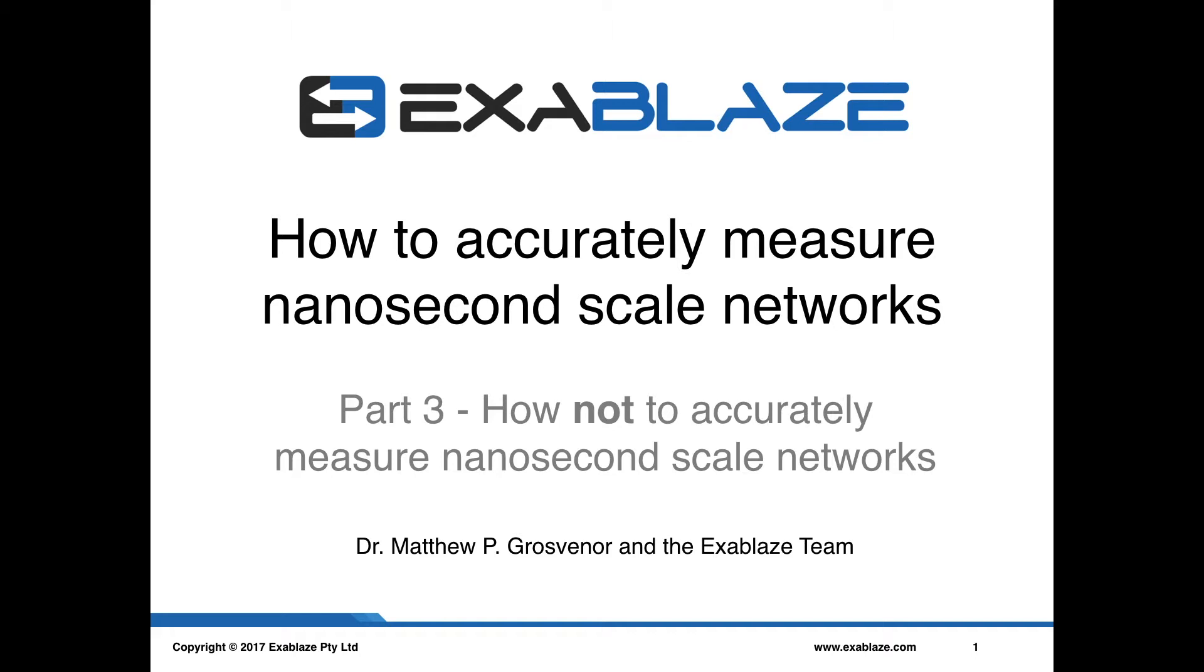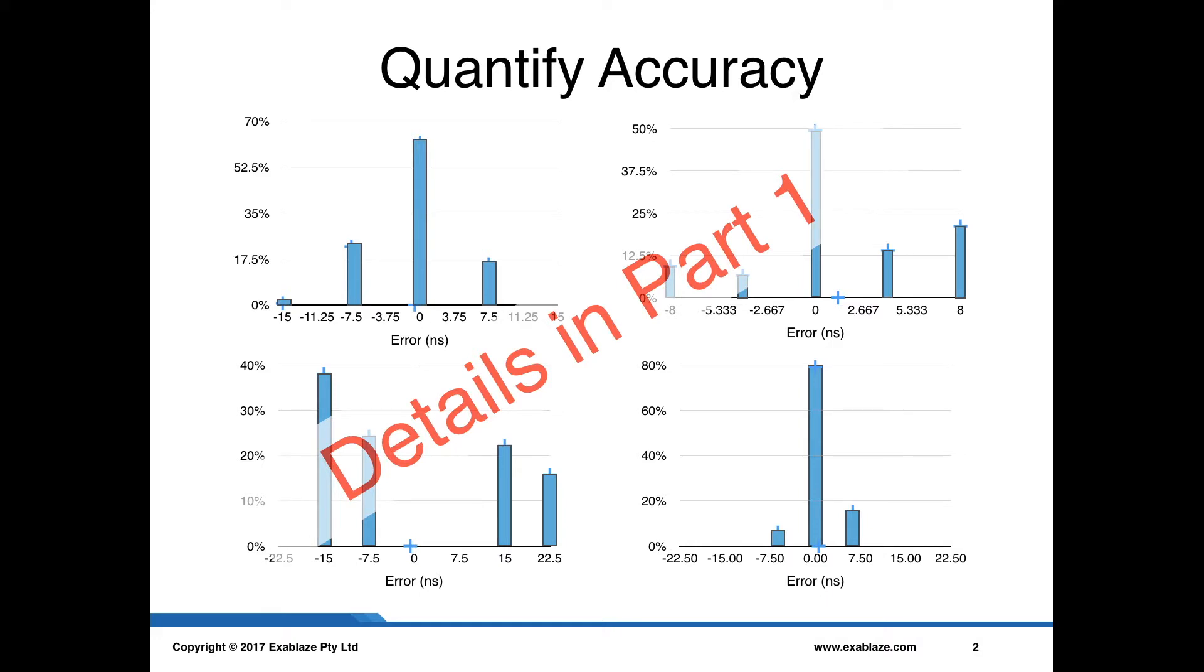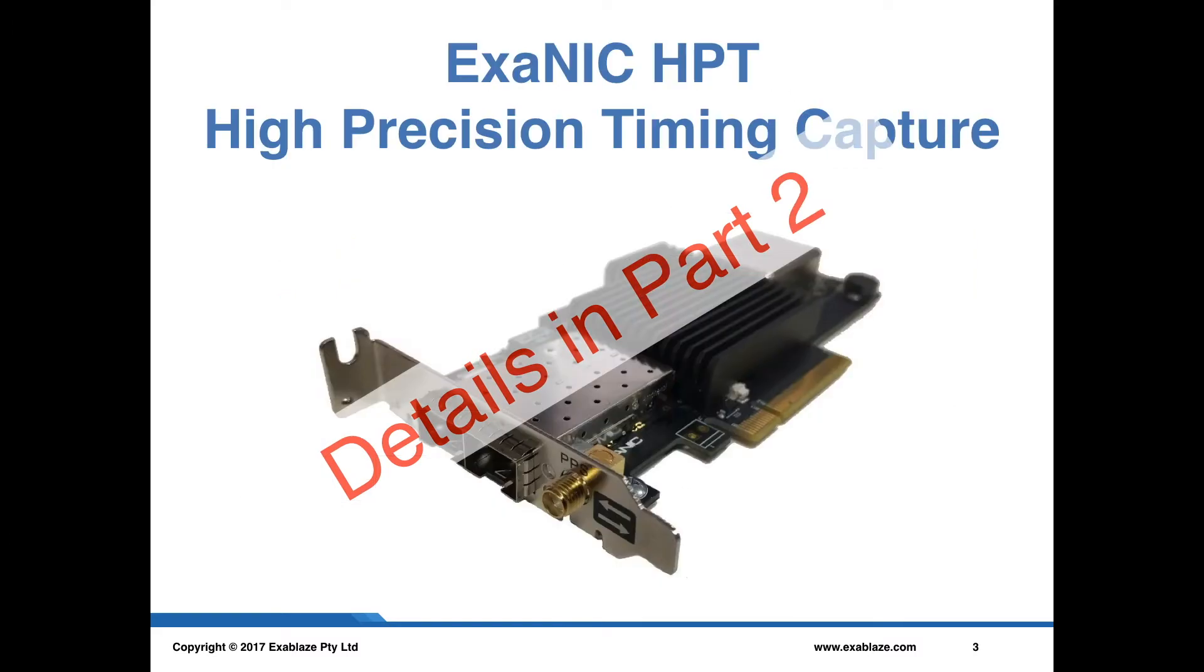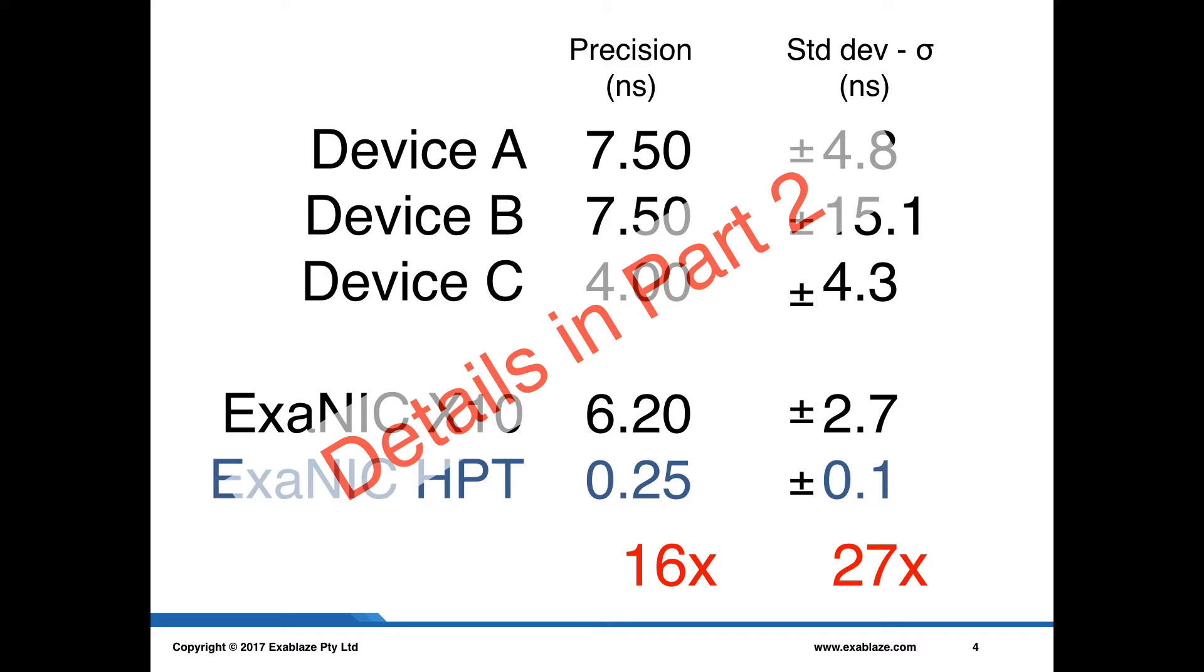In this part we're going to look at how not to accurately measure nanosecond scale networks and some of the traps and gotchas that we find along the way. Previously we looked at how to quantify the accuracy of network measurement devices and we introduced the ExaBlaze HPT which was the highest and best performing network measurement device. So let's get started then.